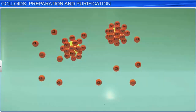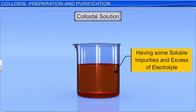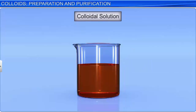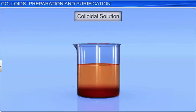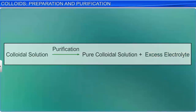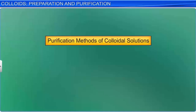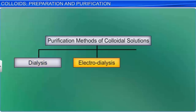The colloidal solutions prepared by the methods we just discussed are generally associated with some soluble impurities and some excess of electrolyte. Though a trace amount of the electrolyte is sometimes essential for the stability of the colloidal solution, an excess of it causes coagulation of the sol. That is why the salts obtained are subjected to purification to get rid of excess electrolyte. The methods commonly employed for the purification of colloidal solutions are dialysis, electrodialysis, and ultrafiltration.